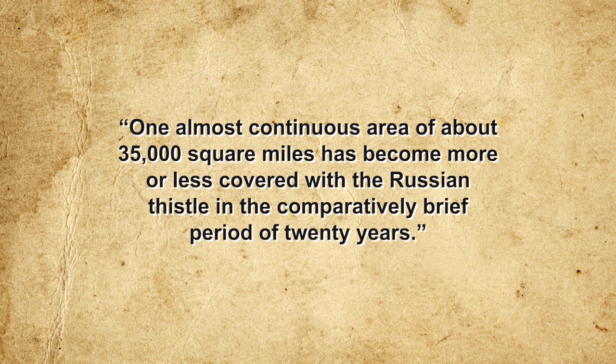By 1877, tumbleweeds were a common sight in South Dakota, while by 1900 they had spread as far as Bakersfield, California. As one government botanist sent to investigate in the 1890s reported, one almost continuous area of about 35,000 square miles had become more or less covered with Russian thistle in the comparatively brief period of 20 years. The plant's ability to thrive in hot dry environments and its high tolerance for salt made it ideally suited to the American West, but it was the agricultural boom of the late 19th century that truly made it spread like wildfire. Ordinarily, Salsola cannot compete with prairie grasses because grass seeds contain endosperm, allowing them to sprout earlier in the season — but the large plowed fields and overgrazed pastures of the frontier, plus the lack of natural predators or pathogens, provided an ideal, competition-free environment for Salsola to thrive.